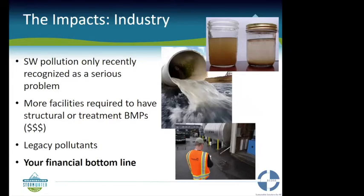Stormwater pollution was only recently recognized as a problem. In 2000 and 2005, the issues were oily sheen, pH, and temperature; gradually metals were added, and now PCBs and other compounds. More facilities are now required to have structural or treatment BMPs to address these pollutants, which impacts your pocketbook. There are also a lot of legacy pollutants from historical industry that need to be cleaned up, impacting your financial bottom line.